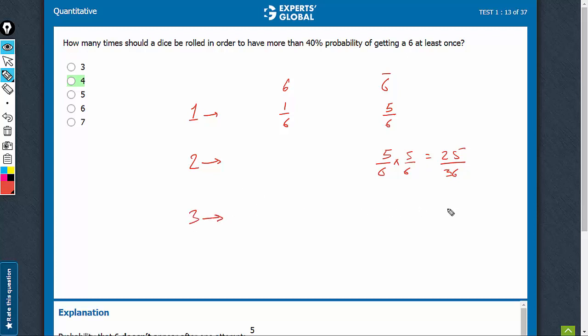Three attempts, this would be now 5 by 6 cube, which is going to be 125 upon 216.